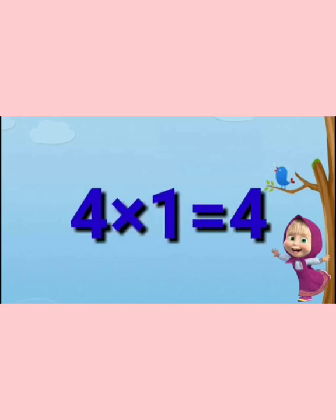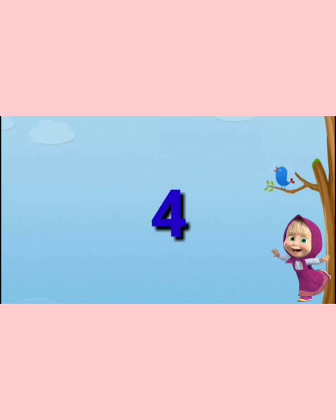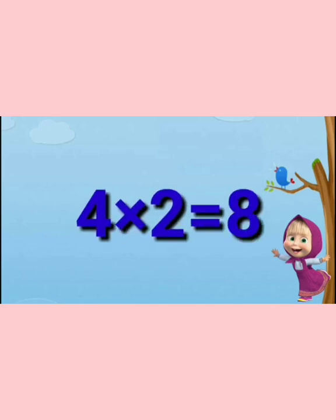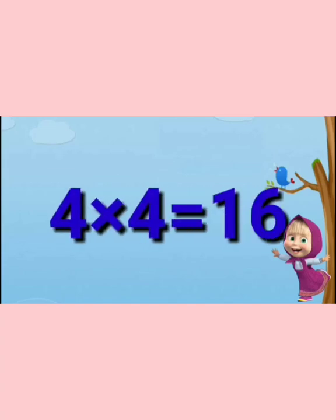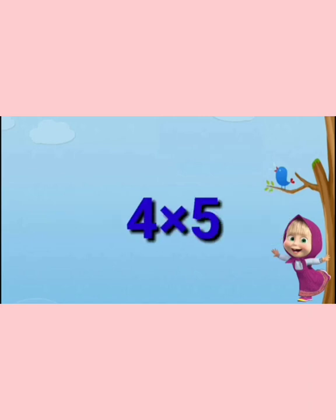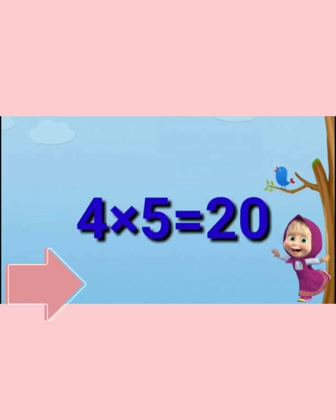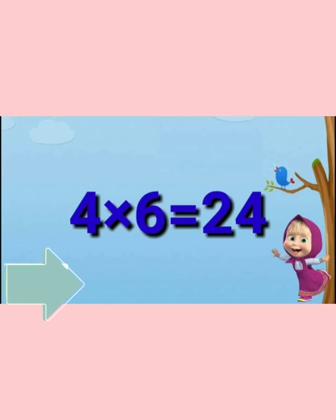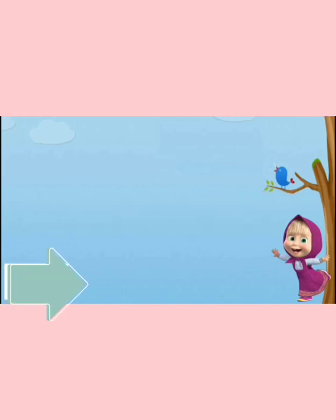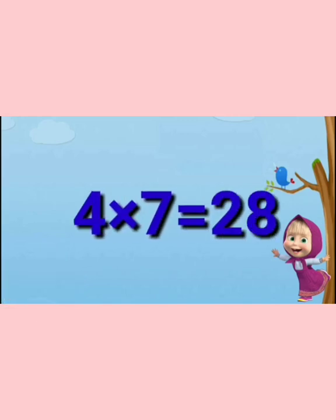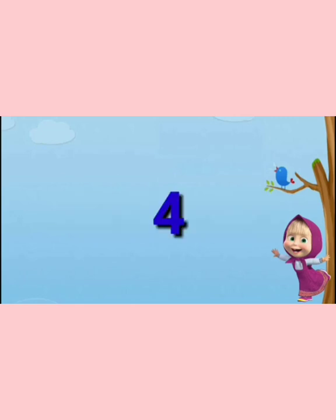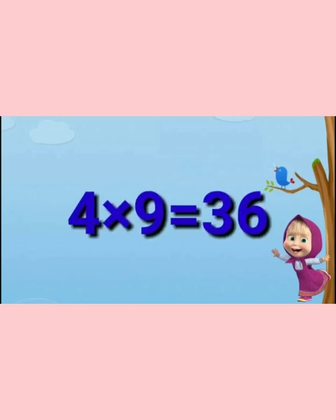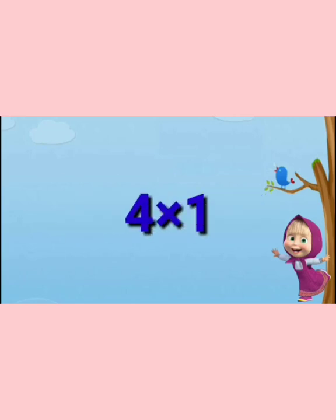Table of 4: 4 ones are 4, 4 twos are 8, 4 threes are 12, 4 fours are 16, 4 fives are 20, 4 sixes are 24, 4 sevens are 28, 4 eights are 32, 4 nines are 36, 4 tens are 40.